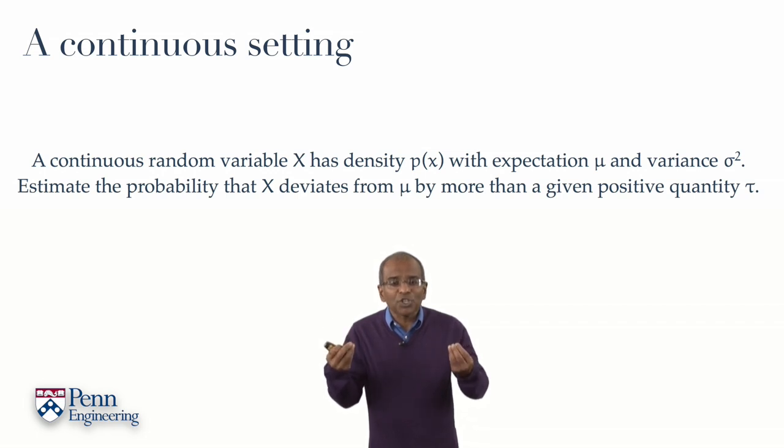A mass function per unit length, p of x. And let us assume that this mass density has an expectation mu and a variance sigma squared.